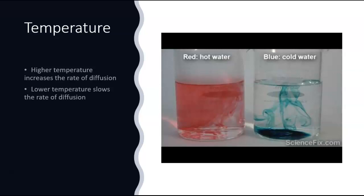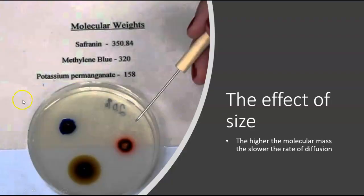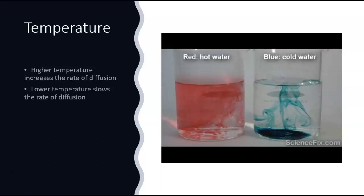Another factor that affects the rate of diffusion is temperature. Here you have two beakers with the same amount of water — one hot, one cold. The dye poured into the hot water is going to diffuse at a much faster rate than the one in cold water. Similarly, if you had two petri dishes and put one at zero degrees Celsius and one at 37 degrees Celsius, the one at 37 degrees Celsius will have the highest rate of diffusion for all the dyes. So the basic concept is: higher temperature, higher rate of diffusion.